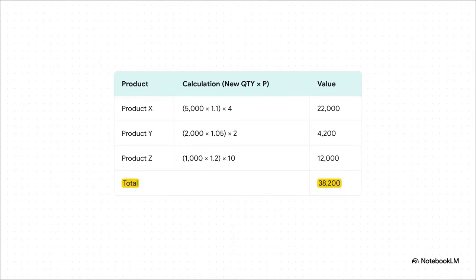So, time to crunch the numbers for 2010. That 10% boost for product X brings its value to 22,000. Product Y's little 5% bump takes it to 4,200. And that big 20% jump for product Z brings its value to 12,000. So our new total GDP is 38,200. It's bigger, for sure. But how much bigger, exactly?